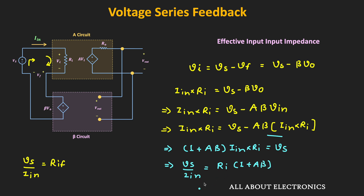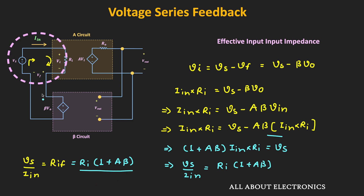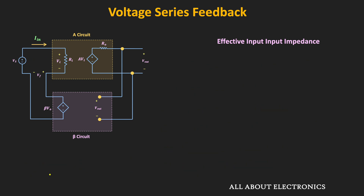As you can see, Vs divided by Iin equals Ri times (1 + Aβ). So with feedback, the input impedance of the amplifier increases by the factor of (1 + Aβ). This effective input impedance of the feedback amplifier increases because we have the series connection on the mixing side.